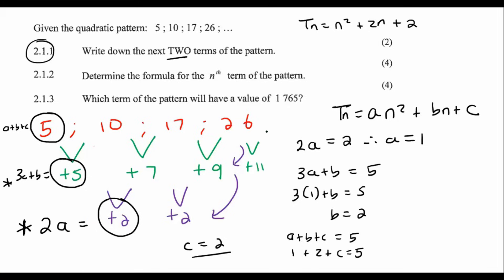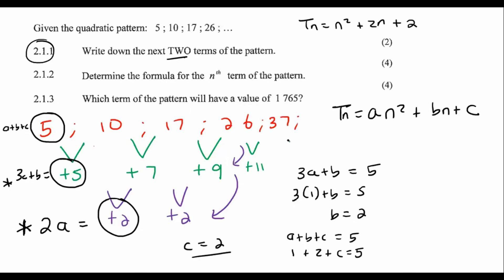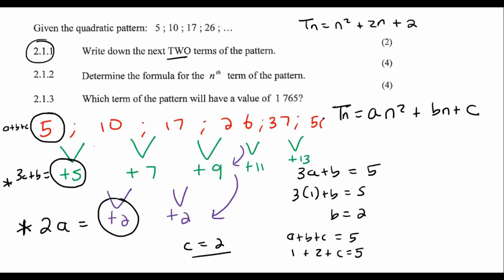So that's plus 11, meaning this will become 37. And then plus 13, so that will become 50. So there's the next two terms: 37 and 50.